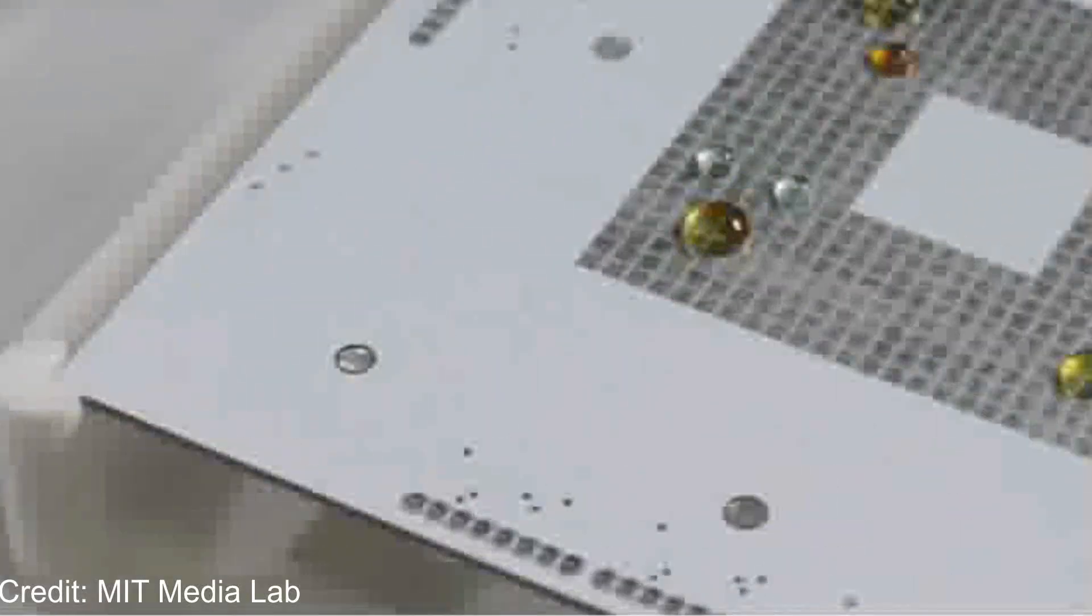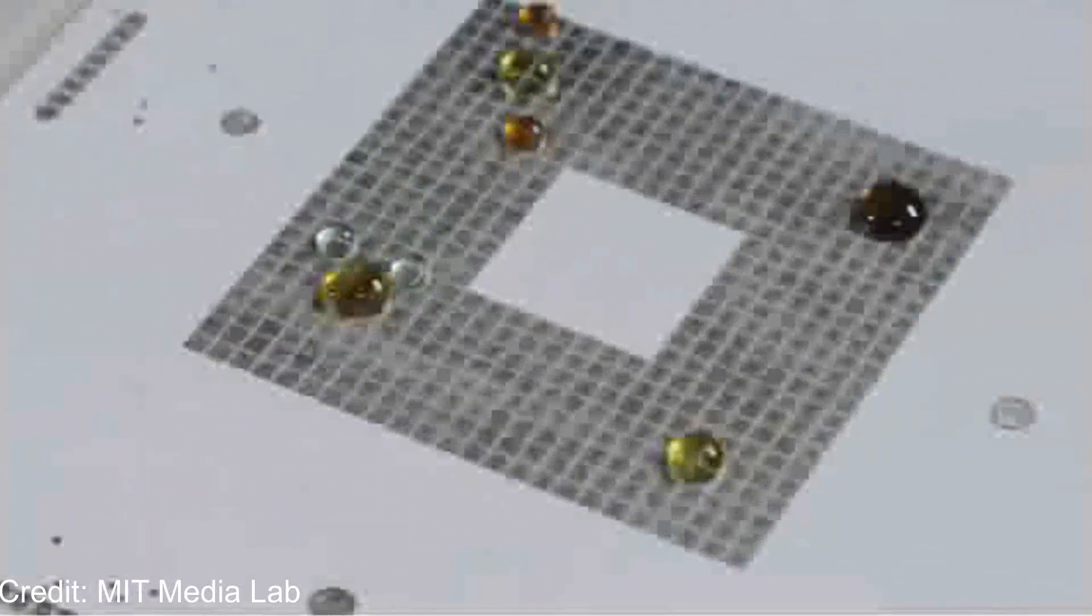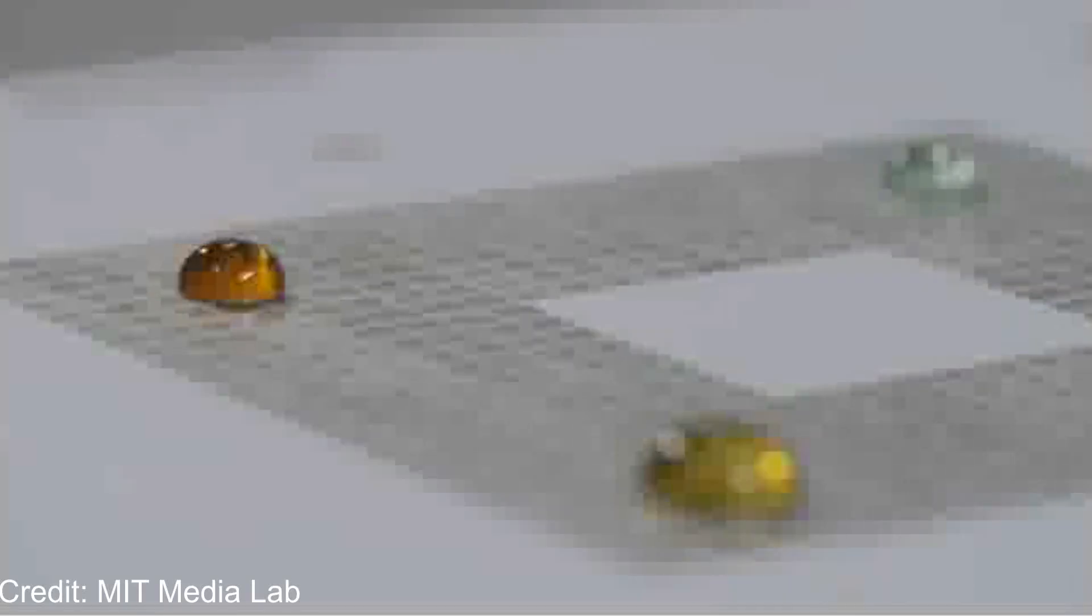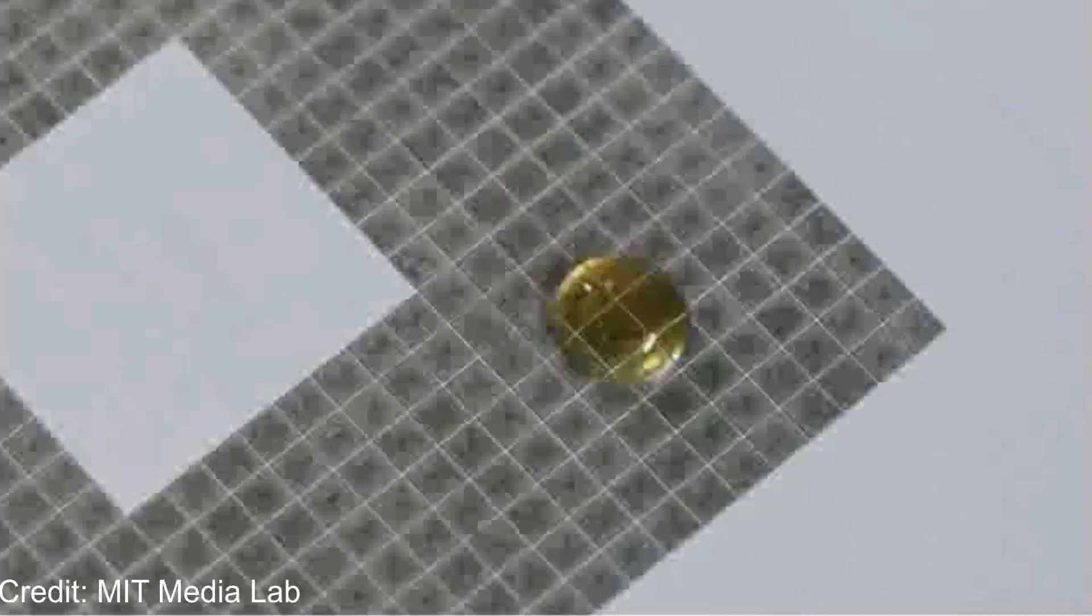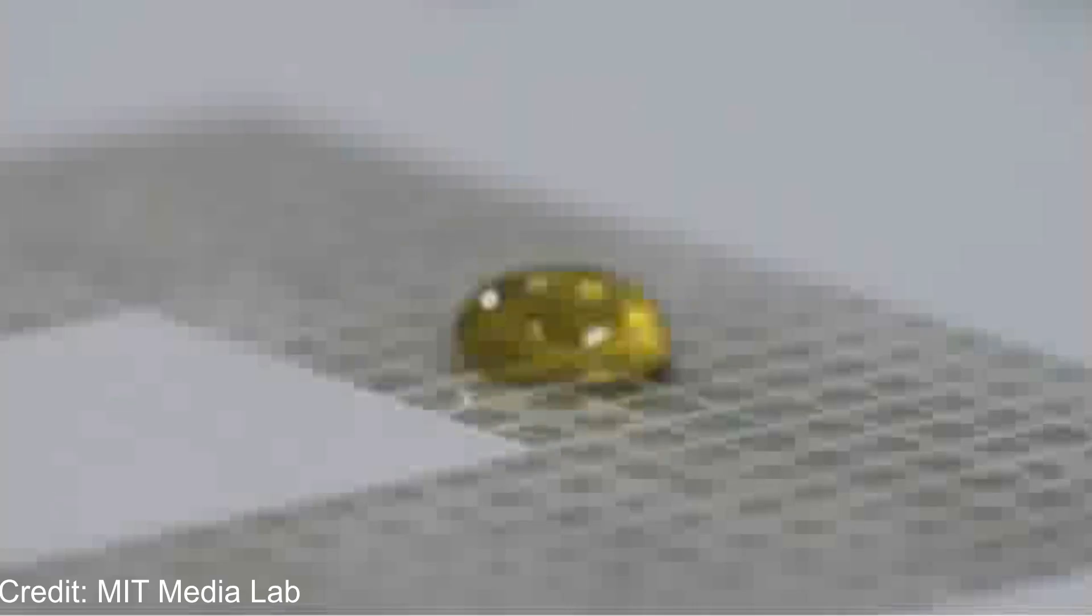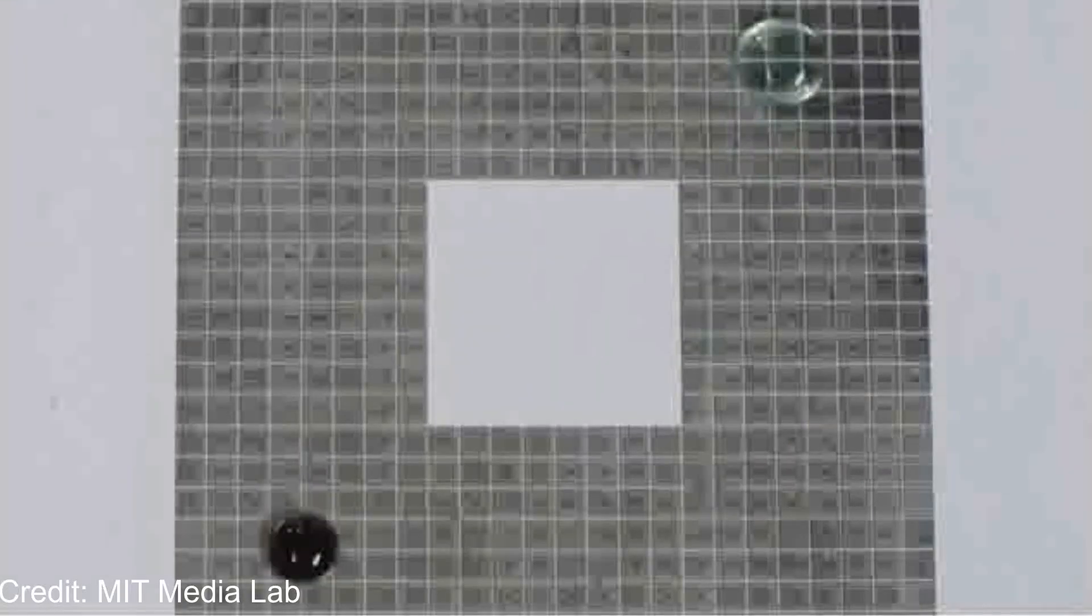Each of these magnetic fields is weak on its own, but activated in sequence, MIT researchers can create a controlled magnetic gradient that pulls the droplet along the surface. This technique is based on a physical phenomenon called magnetophoresis, the movement of particles or fluids in response to a magnetic field gradient.